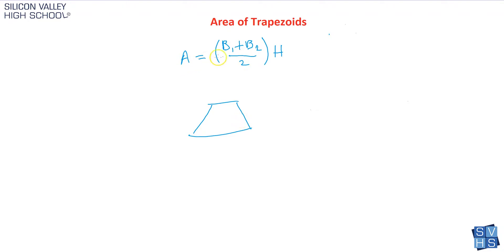The parallel lines are the bases — base one and base two. It really doesn't matter if you consider the top base one and the bottom base two or vice versa. All that matters is that the parallel sides are the bases. The other variable in the formula is h, which is the height. Be careful — like in the other videos, the height has to be exactly perpendicular to the bases.